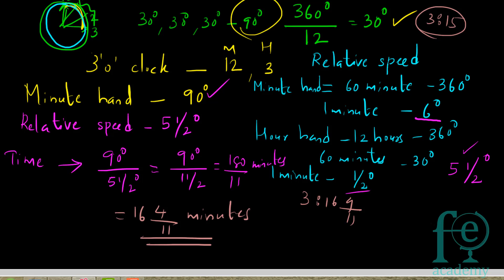For these types of questions, you have to find the position of the hour hand and the minute hand first, then determine how much distance the minute hand has to travel. The relative speed is always 11/2 degrees per minute. Distance divided by speed gives you the time. Thank you for watching.